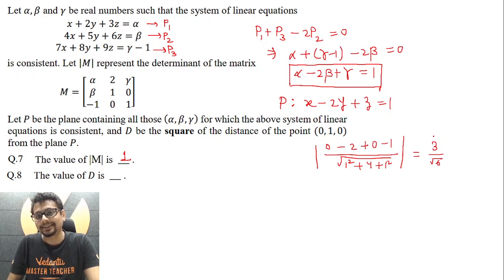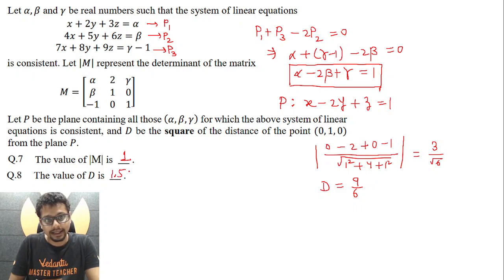So this essentially becomes 3 by root 6. Now mind it, this is the distance of this point from this plane P. But what we want is a square of the distance. So D essentially will be 9 by 6. 3 square is 9, root 6 square is 6. 9 by 6 is 3 by 2, which is 1.5. And that's the answer for question 8.